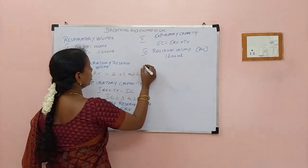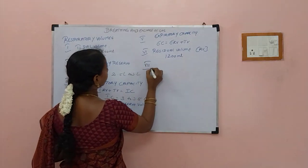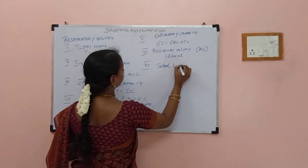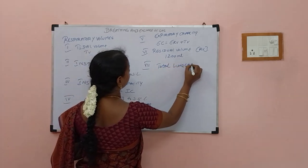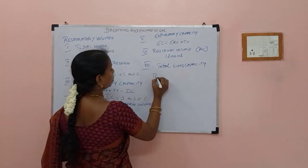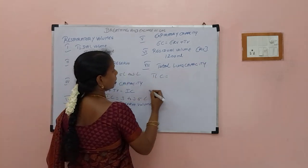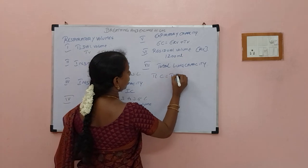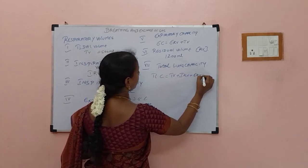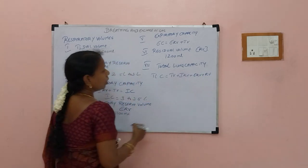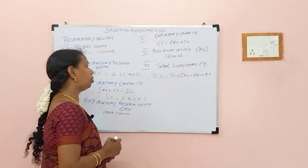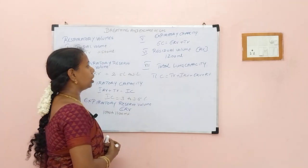The next one is total lung capacity. Total lung capacity, or TLC, is equal to TV plus IRV plus ERV plus RV, which comes to around 6000 ml or 6 litres.